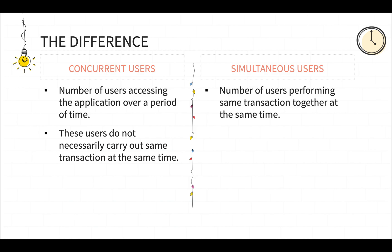So all the users are performing these activities at the same time, but they are not carrying out the same transaction. These users are not necessarily carrying out the same transaction at the same time — so these are the concurrent users.